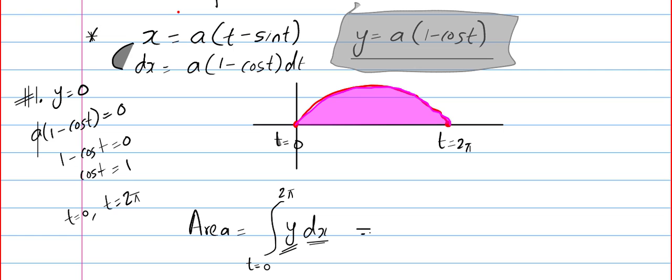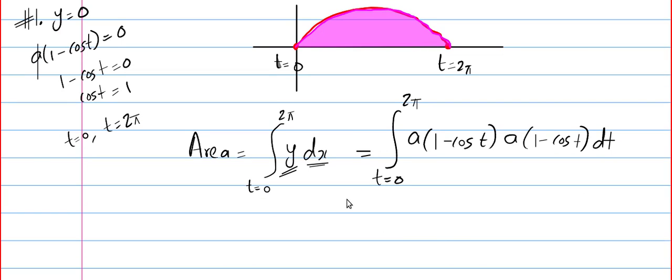Time to substitute. So, integral t equal to 0 to 2π. The value of y is a times (1 minus cos t). And the value of dx is a times (1 minus cos t) dt. So, together we get a² integral t equals 0 to 2π of (1 minus cos t)² dt.